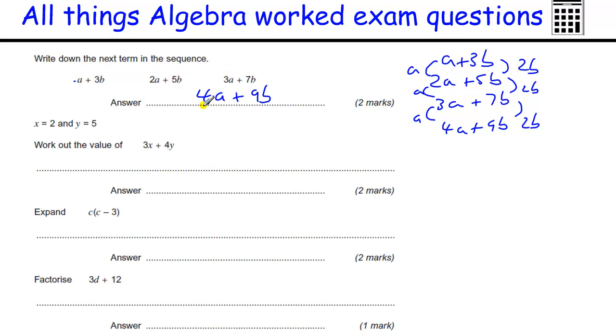So we can treat them separately. We've got A, 2A, 3A, 4A, 3B, 5B, 7B, 9B.